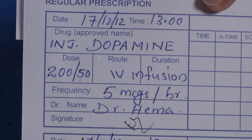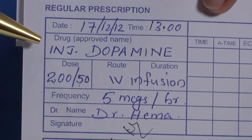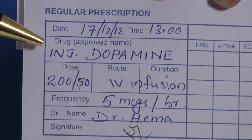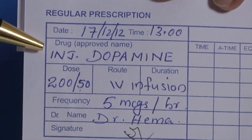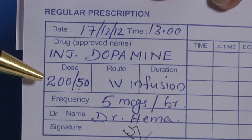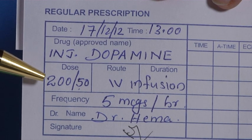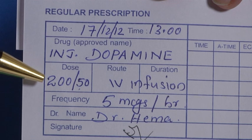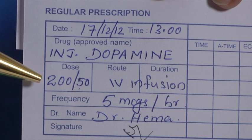First of all, we have this date and time column. Next is the specified drug, which is injection dopamine. The dose column says 200 by 50, which indicates a solution containing 200 mg of the drug in 50 ml of the IV solution.